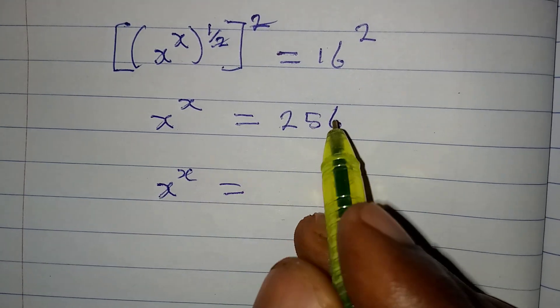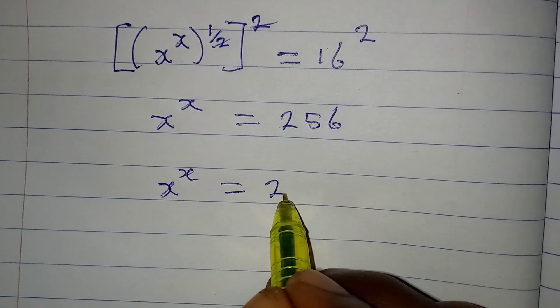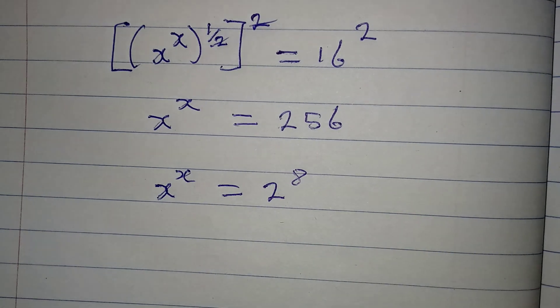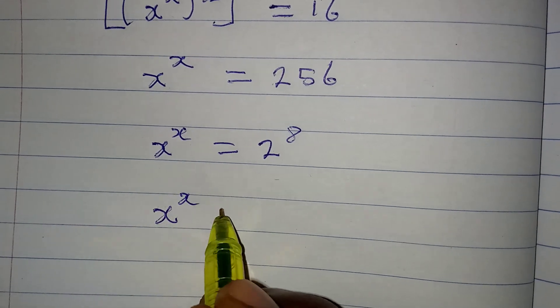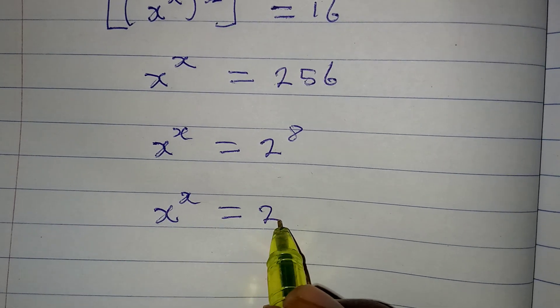256 is the same thing as 2 to the power of 8. Yes, that is correct. Then if you take a step further, you have x to the power of x to be equal to 2 to the power of 2 times 4.